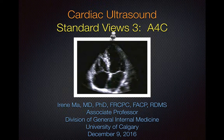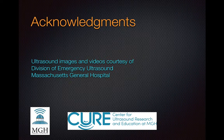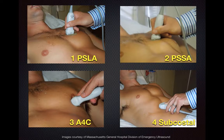This is the third of four modules on the cardiac ultrasound standard views, and we'll be covering the apical four-chamber view today. Acknowledgements go to the Division of Emergency Ultrasound at Massachusetts General Hospital for a number of the images and videos used in this tutorial. In our first two sessions we covered the parasternal long axis and the parasternal short axis, and today we'll be going over the apical four-chamber view.